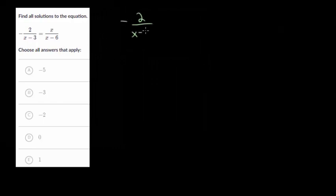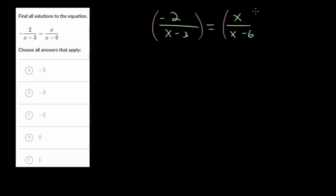So let me make some room for this and rewrite it. We have minus 2 over x minus 3. And for these, just because we're going to be multiplying each side by two expressions now. So this will equal x over x minus 6. And we need to get these x's out of the denominator.